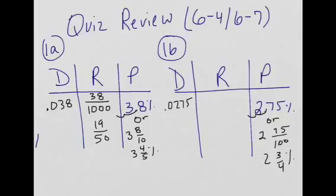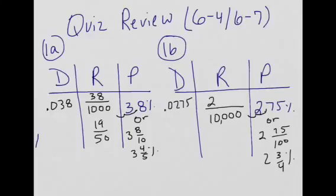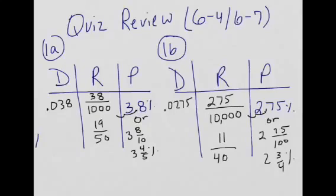To make it into a ratio, we use the decimal as our 1 and count our digits. We have four digits, so that puts four zeros underneath, giving us 10,000. You can also use place value — the 5 is in the ten-thousandths place, so you read it as 275 ten-thousandths. We simplify that, and it comes down to 11 over 400. You can start simplifying by 25 and work your way down.